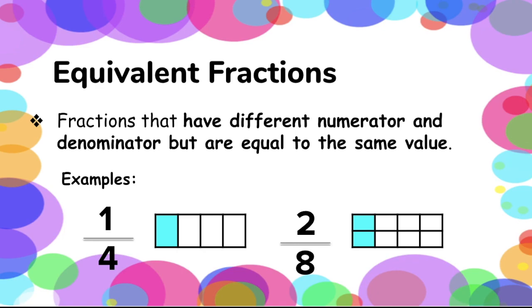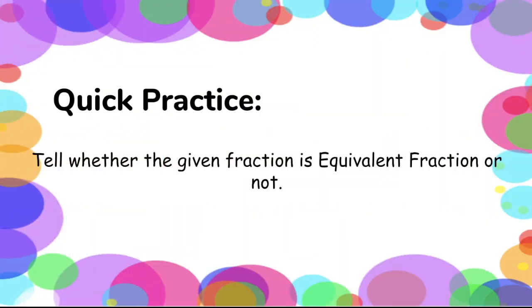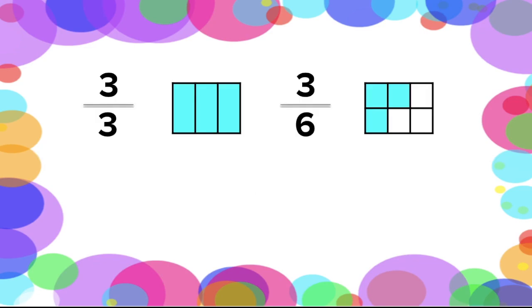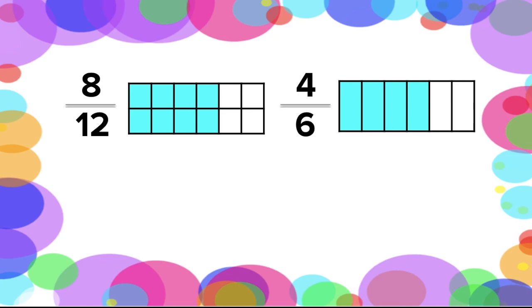Let's have a quick practice. Tell whether the given fraction is equivalent or not. Does our first given show an equivalent fraction value? The answer is not, because 3 over 3 is greater than 3 over 6. For our last given — does it have an equivalent fraction value? Yes, it does, so this is an equivalent fraction.